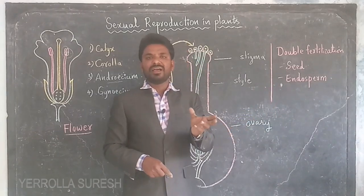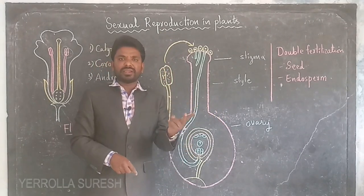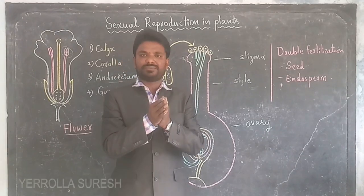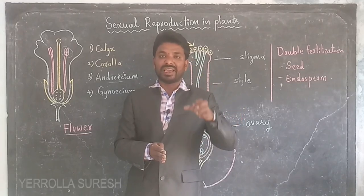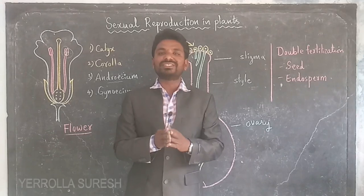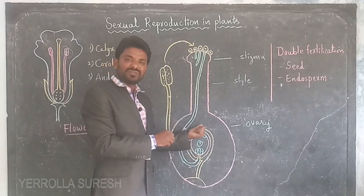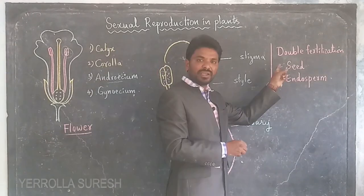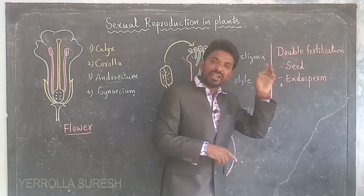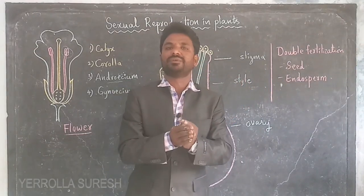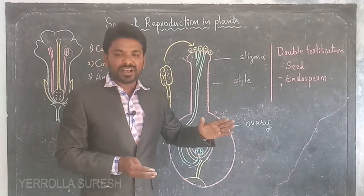In plants, double fertilization occurs: the first fertilization with the egg cell produces the zygote, and the second fertilization with the central cell produces the endosperm. The endosperm is a food material stored inside the seed. With this, both pollination and fertilization are completed.